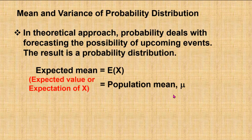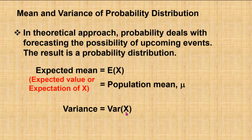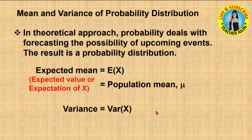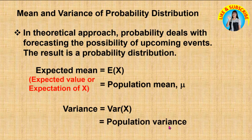From the probability distribution, we can also find the variance of X, where it is denoted as VAR. VAR stands for variance. This is the population variance of the distribution.